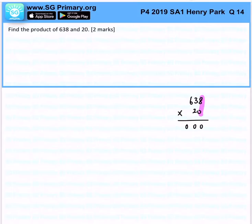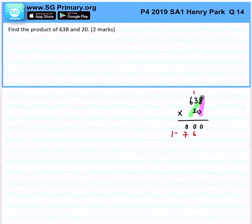Now let's take a look at the next step, which is to look at 8 times 2. So 8 times 2 will be 16, so I will place 6 over here and 1 over here. Subsequently, 3 times 2 is 6, plus 1 will be 7, and then 6 times 2 will be 12.